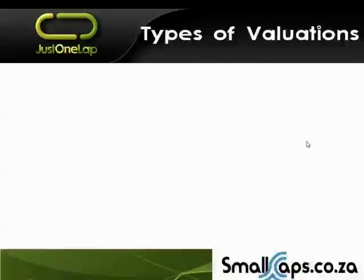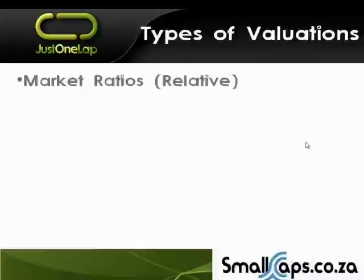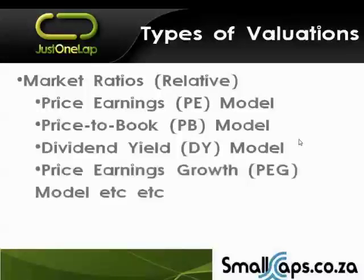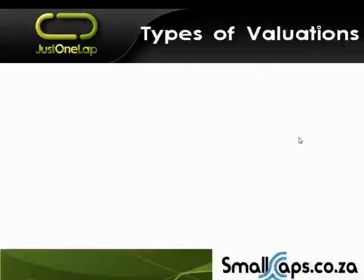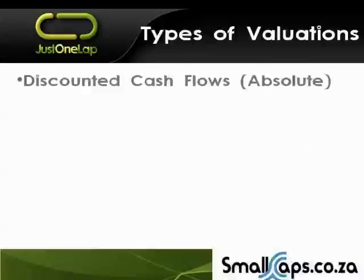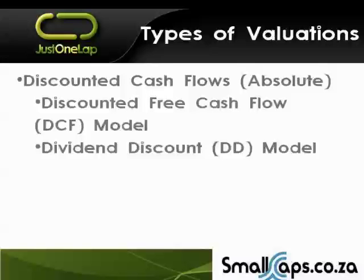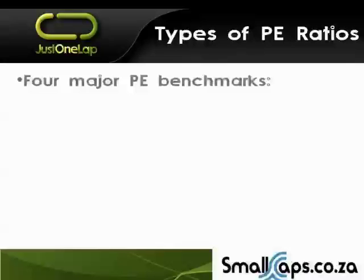We had a look at the basics of valuation. The first is market ratios — the price-earnings model, which we touched on in theory last week. There's also price-to-book, dividend yield, and price-earnings growth — the PEG model. There are actually a lot of market ratios; this is just an example. Then we have absolute valuations. The difference between relative and absolute is that relative pegs to something, whereas absolute values it in isolation. Two major absolute valuations are the discounted free cash flow model — the DCF model — and the dividend discount model. From now on, I'll be talking about PE, not price-earnings.